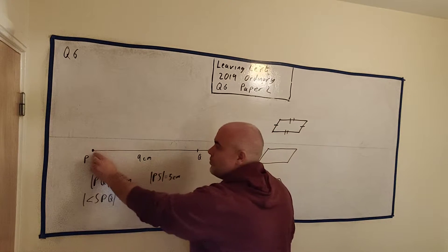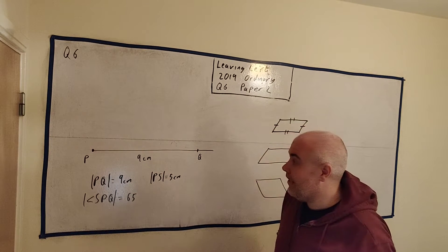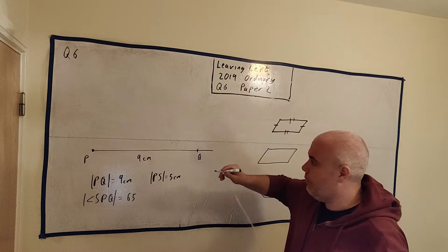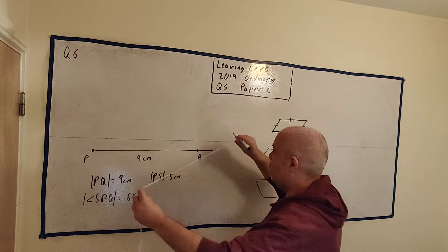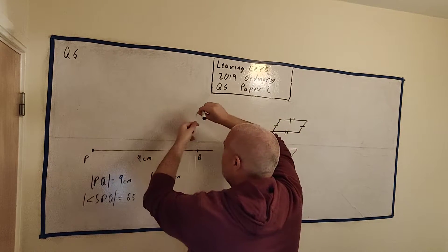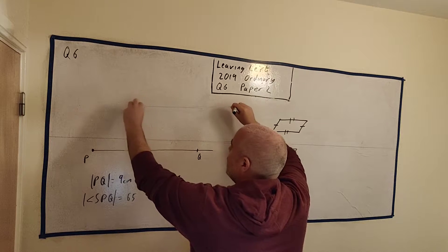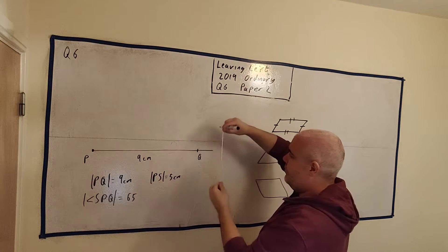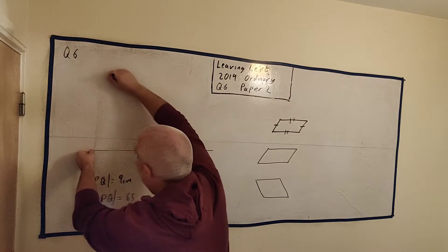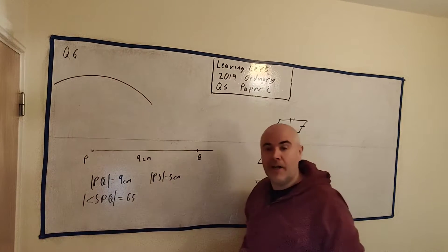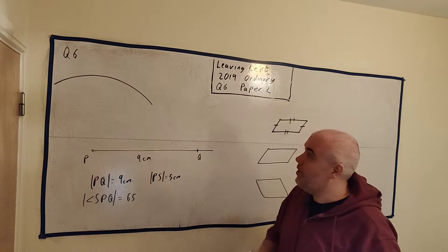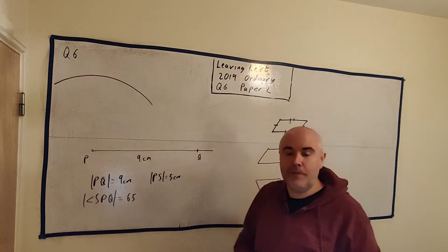S has to start at P and it has to be somewhere up here. We know it's 5 centimeters away from here, so we simply get a compass. Now again, I do not have a compass, so I've made one here with a string. I measure out on a ruler 5 centimeters. I then just use the compass to mark off a circle. Everywhere on that circle is 5 centimeters away from here. So S is somewhere up there.